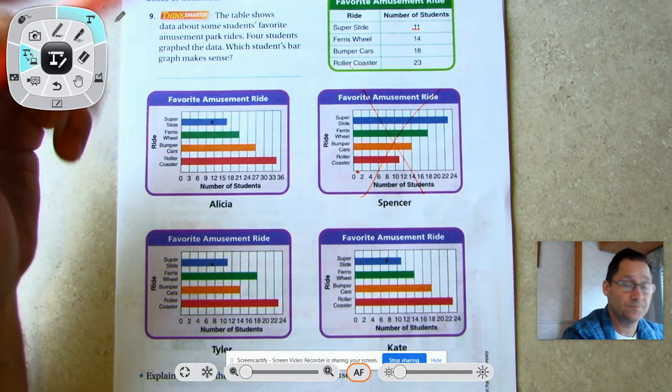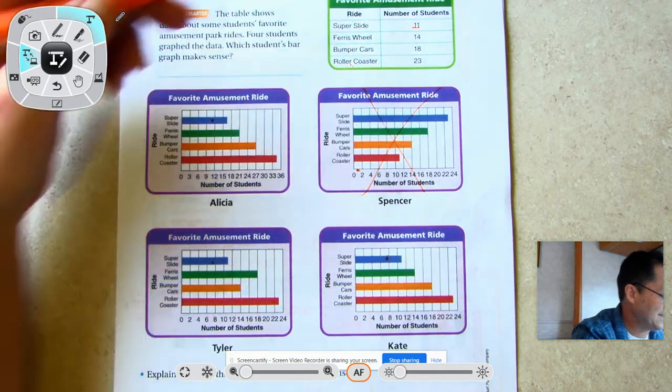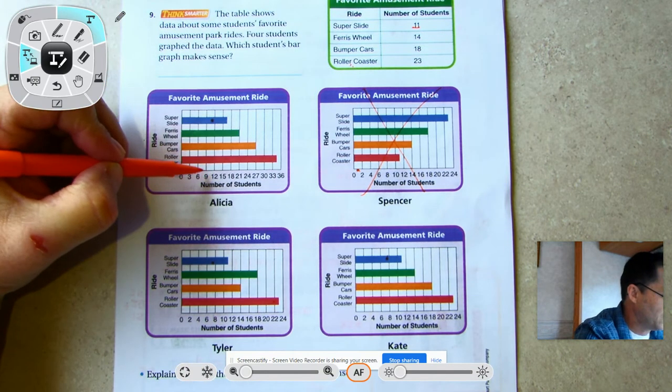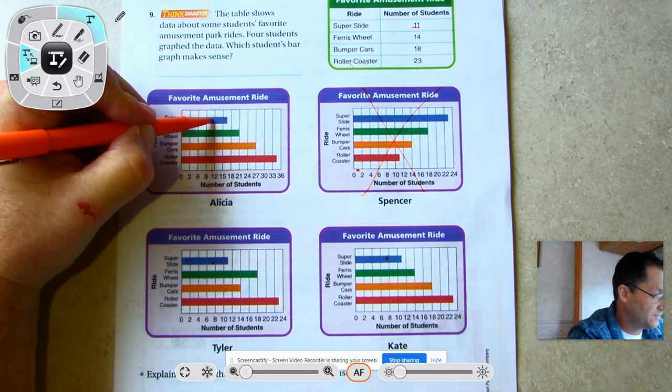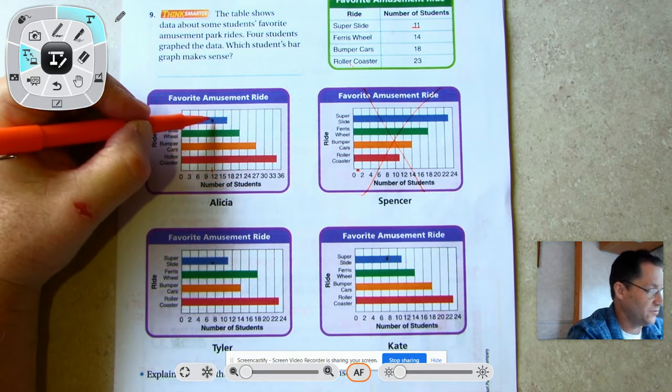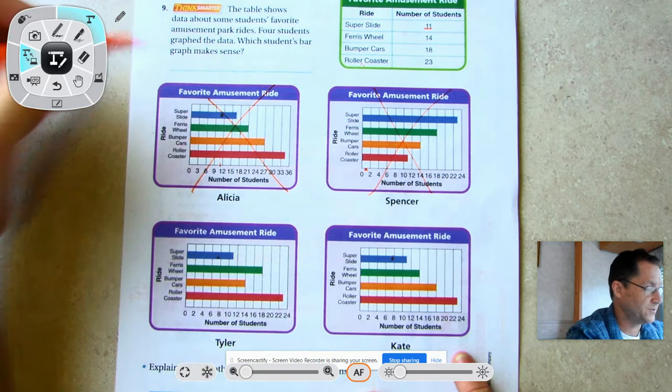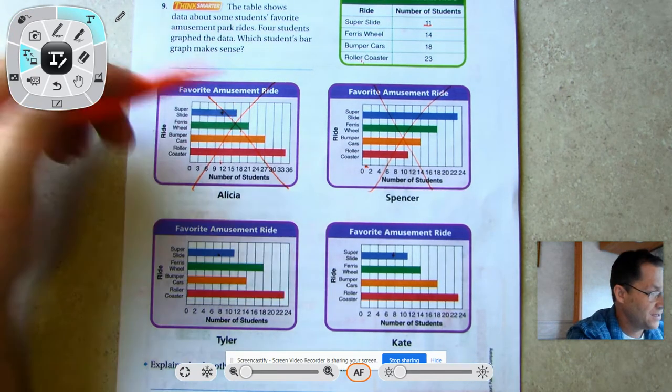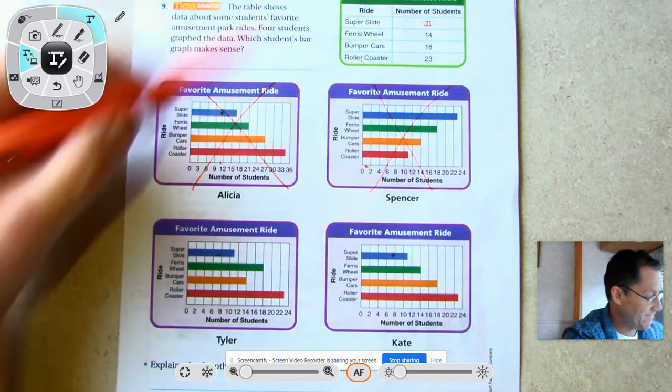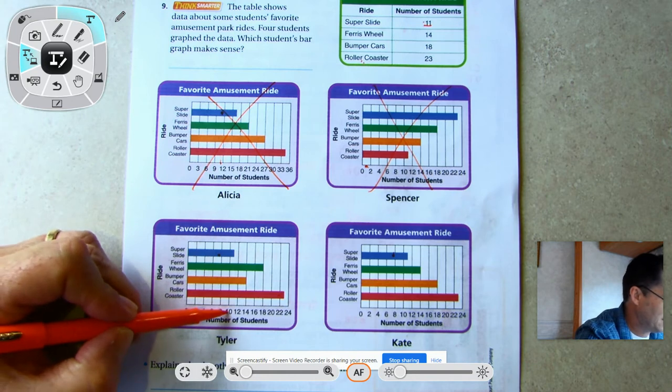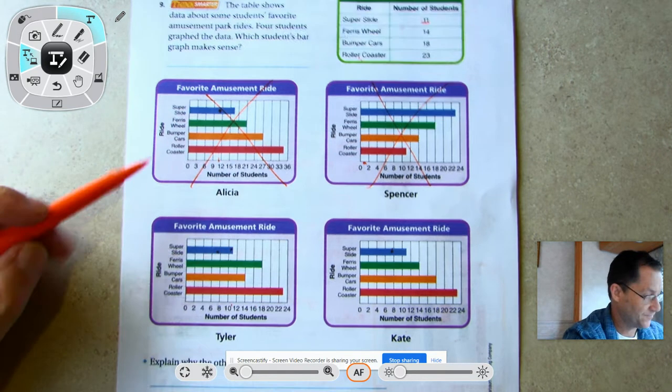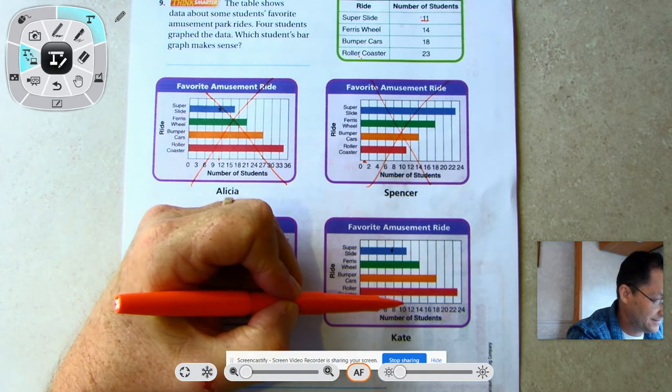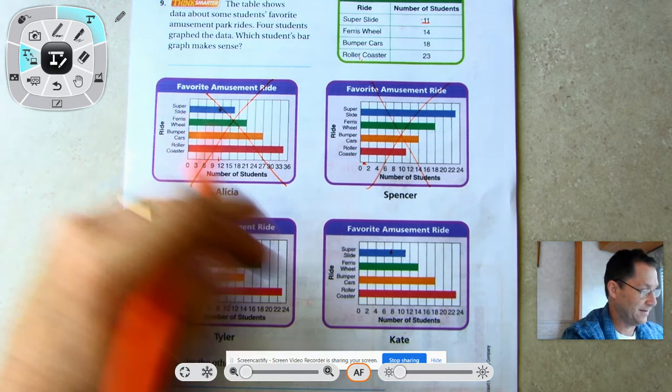Super slide 11 - let's see if it's 11 in this one. 11 is in between 10 and 12, so that's right. And it is also right here, so we can't eliminate those. Now let's look at Ferris Wheel 14. Ferris Wheel 14 - on Tyler's he's got Ferris Wheel as being 18, so that can't be right. Kate's got Ferris Wheel as 14, so the super slide is right, the Ferris Wheel is right.